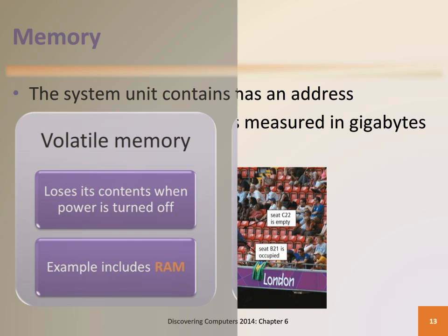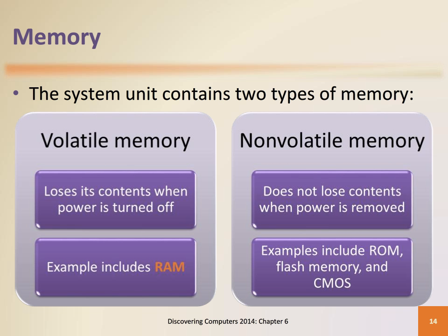Users typically are referring to RAM, random access memory, when discussing computer memory. RAM is considered volatile memory; the contents are lost when the power is turned off. When the computer is turned on, certain operating system files load into RAM from a storage device, such as a hard disk. As additional programs and data are requested, they also load into RAM from storage.